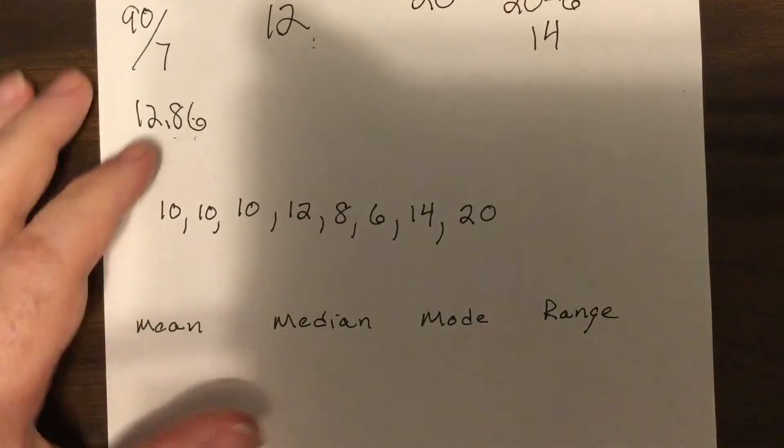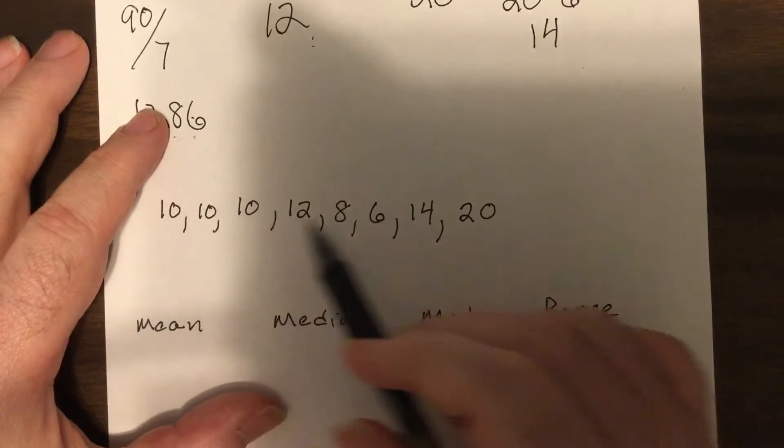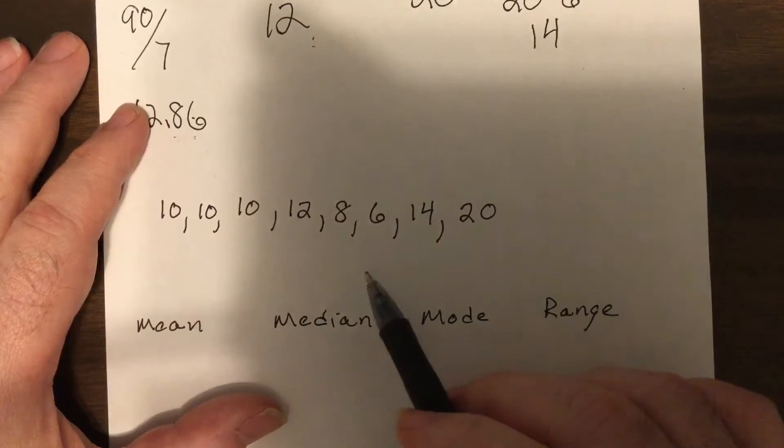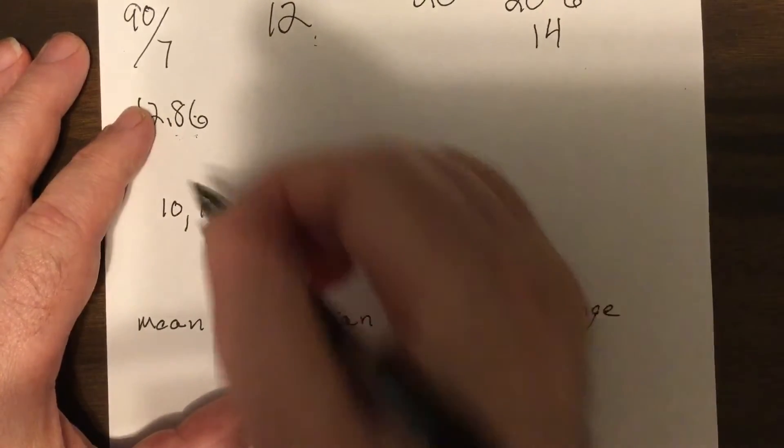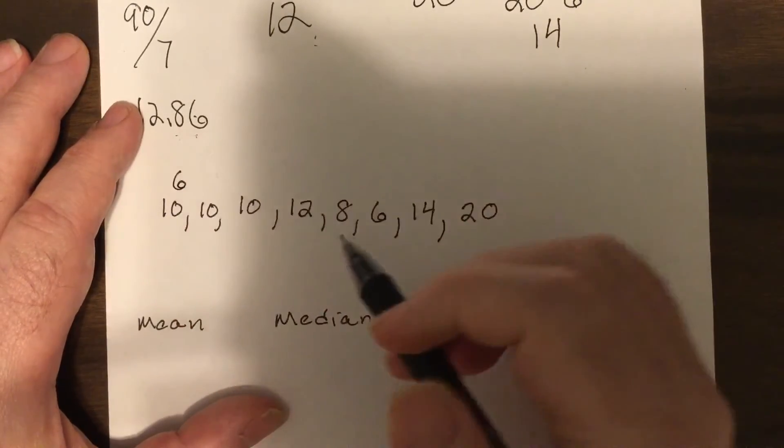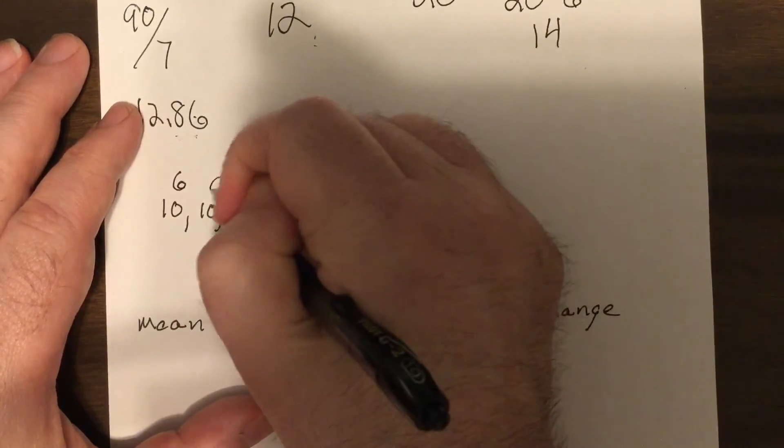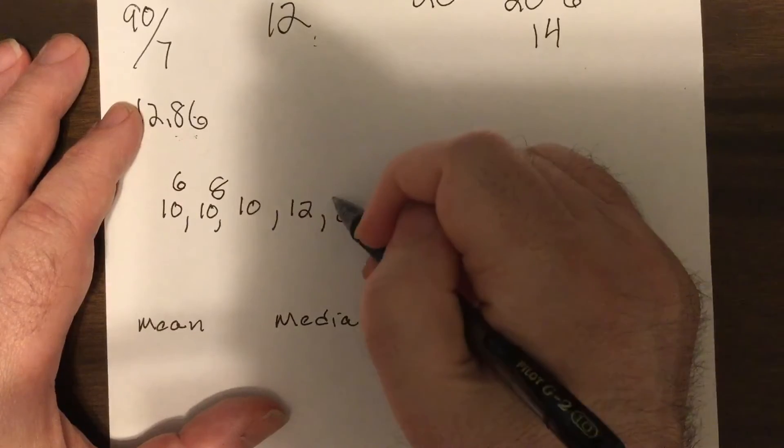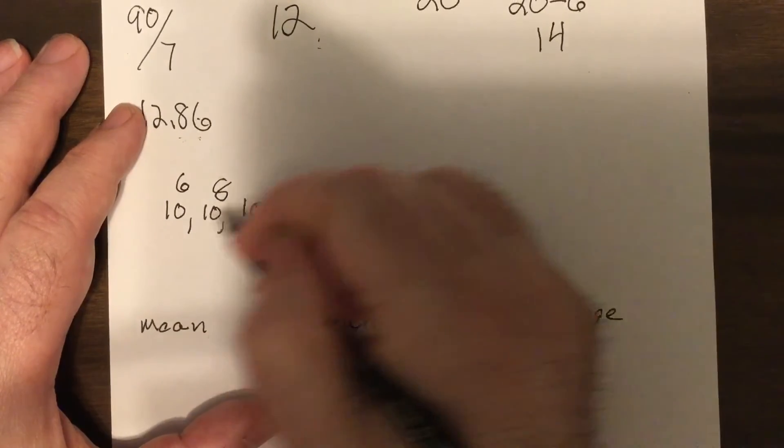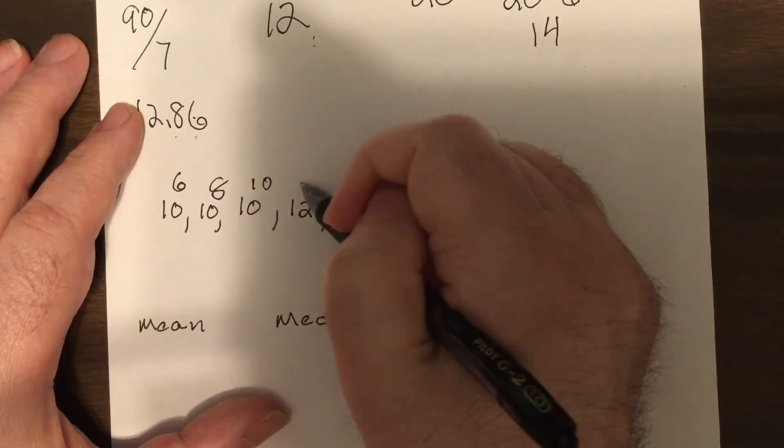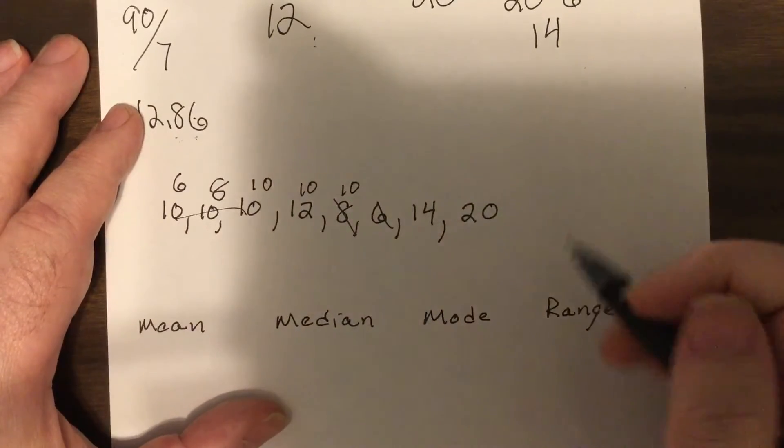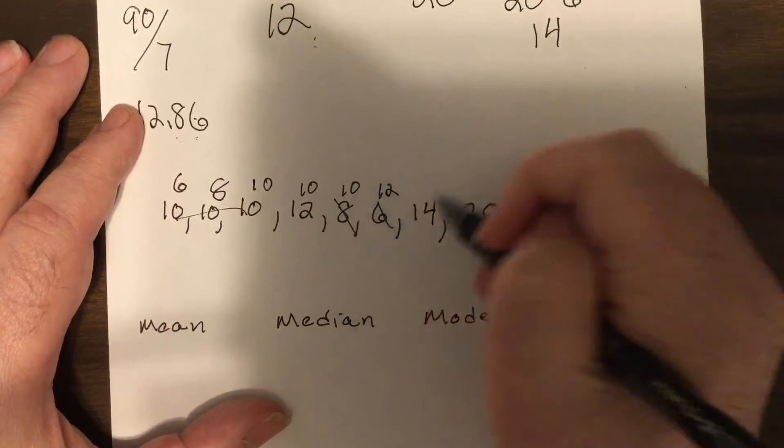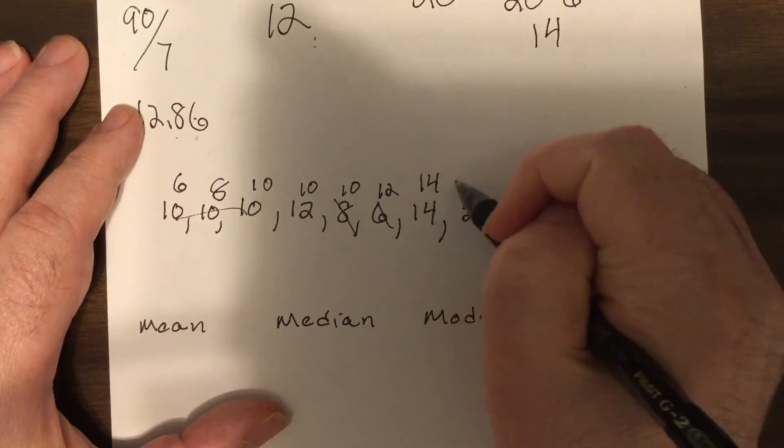First thing you should do when you're given a list of numbers, arrange them lowest to highest or highest to lowest. So I'm gonna, let's see, 6, 8, and then I got three tens, 10, 10, 10, 10, wow, then we got 12, 14, and 20.